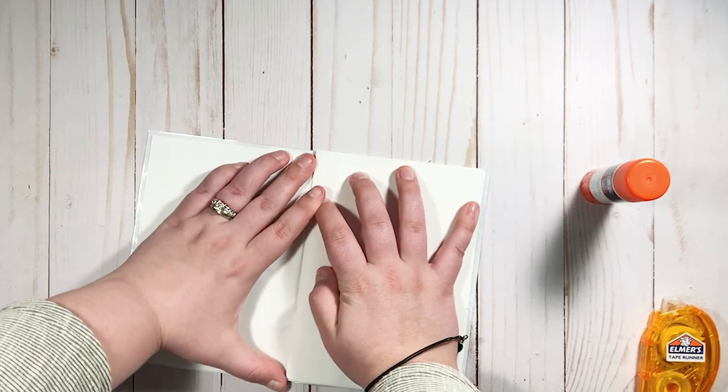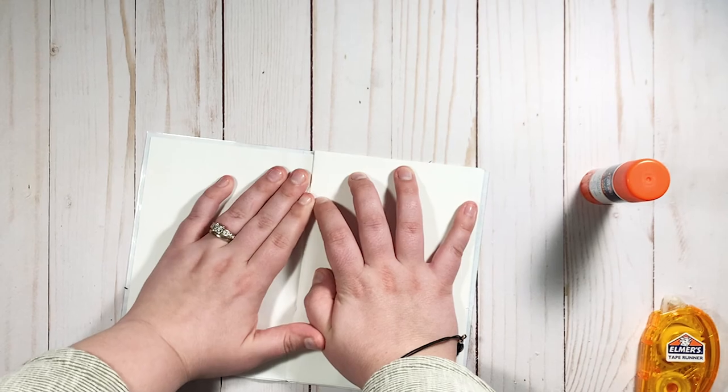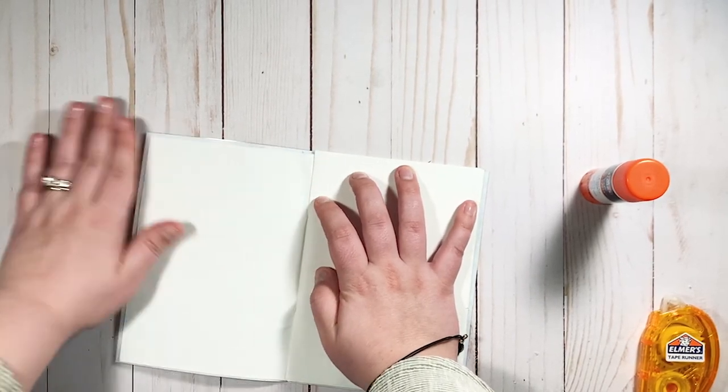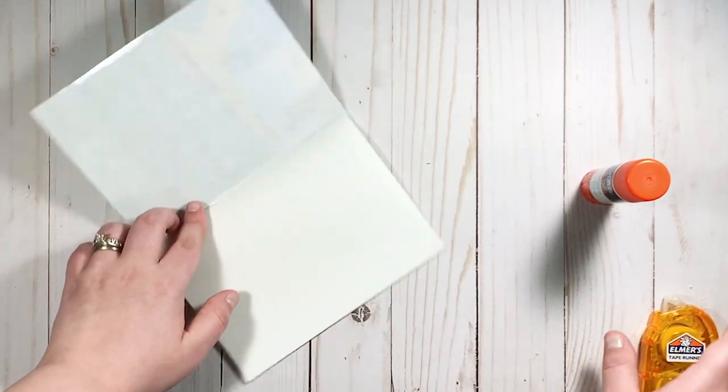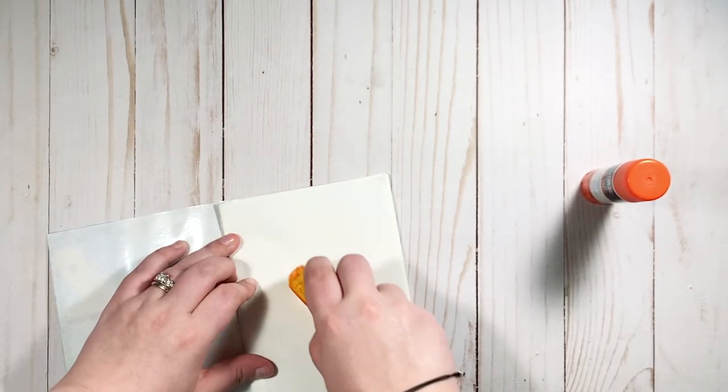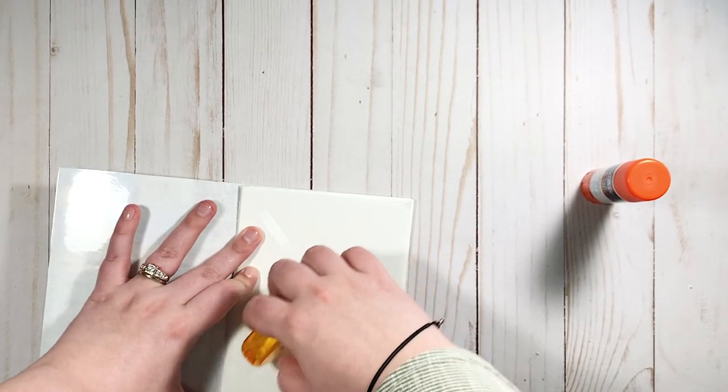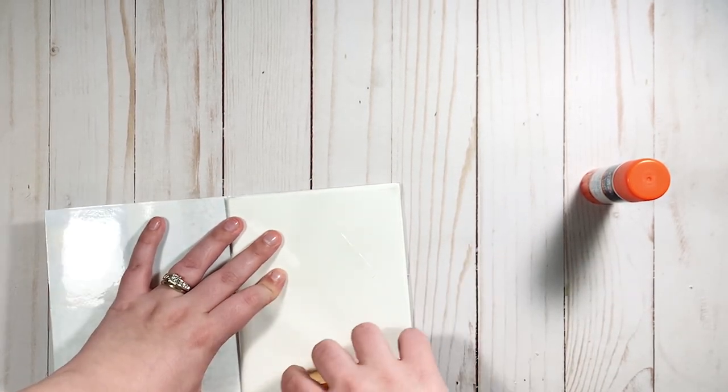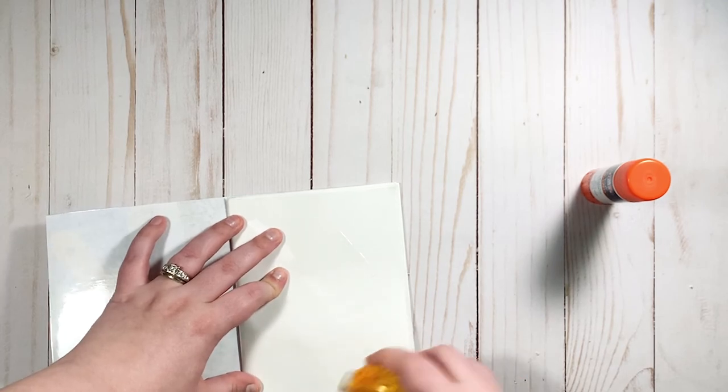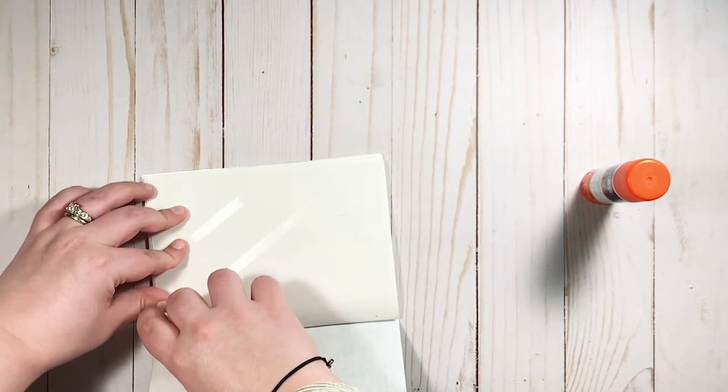I do also use an Elmer's craft glue stick, and I'll show you that in a minute as well. So you see here I'm just flipping it over, using the tape runner on the last sheet on the insert for the back cover. I messed up and I decided to keep this footage in here because you might mess up too and that's all right.